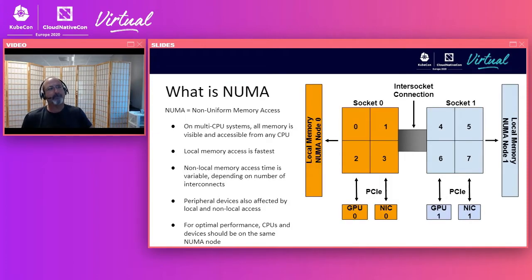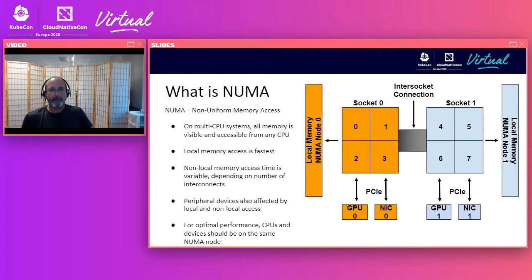NUMA stands for Non-Uniform Memory Access. In a two NUMA node system with two CPU sockets, each CPU has local access to its directly connected memory and devices, and can certainly access all memory on the system. However, for CPU 0 on socket 0 to access memory on NUMA node 1, it must go over the inter-socket connection. Accessing memory or devices over the interconnect adds delays, so to get the best performance, pod resources such as CPUs and devices should be on the same NUMA node.